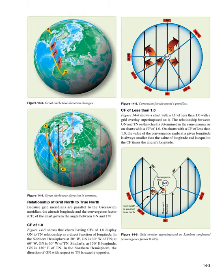Relationship of grid north to true north. Because grid meridians are parallel to the Greenwich meridian, the aircraft longitude and the convergence factor (CF) of the chart govern the angle between GN and TN. CF of 1.0: figure 14-5 shows that charts having CFs of 1.0 display the GN to TN relationship as a direct function of longitude. In the northern hemisphere, at 30 degrees west, GN is 30 degrees west of TN; at 60 degrees west, GN is 60 degrees west of TN. Similarly, at 130 degrees east longitude, GN is 130 degrees east of TN. In the southern hemisphere, the direction of GN with respect to TN is exactly opposite.